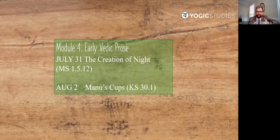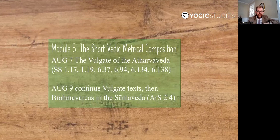Module four, we get into the earliest prose of all. This is the prose embedded in the actual Samhita, or primary performative utterance collection, of the Black Yajur Veda. We're going to see Three Tales, The Creation of Night, and Manu's Cups. These are fun ones with lots of ritual dimensions, and we'll talk about why that is.